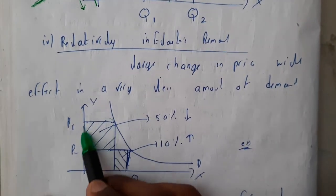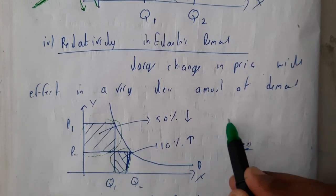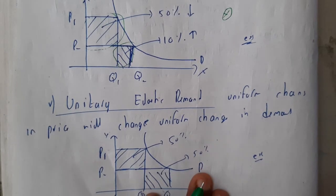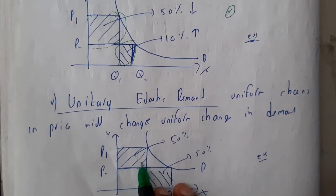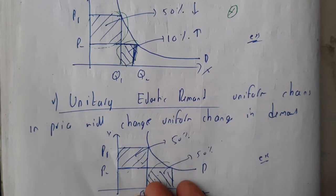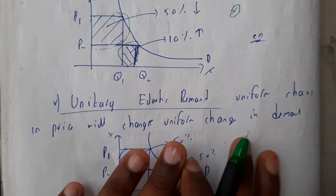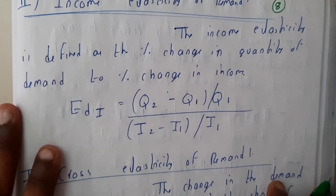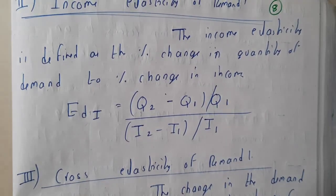Finally, unitary elastic demand — here the change in price will exactly match the change in quantity demanded. These are our normal products. I hope everyone got a small idea on price elasticity of demand. In the next lecture we'll go through the remaining three: income elasticity, cross elasticity, and advertising elasticity of demand. Thank you, thanks for watching.